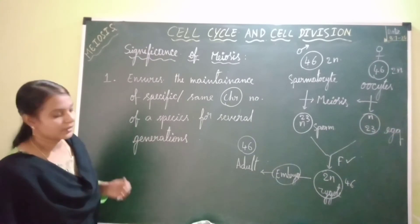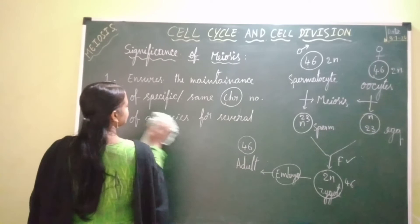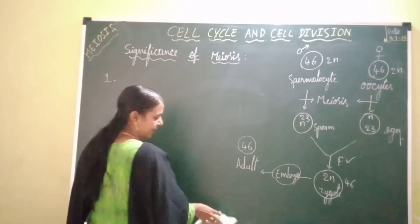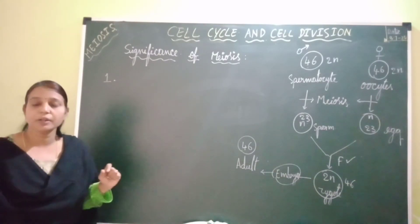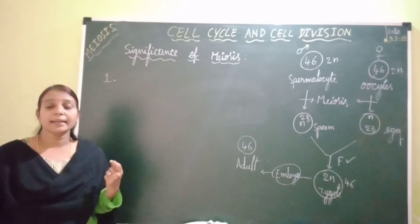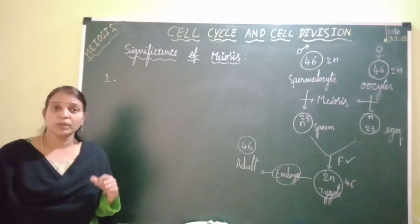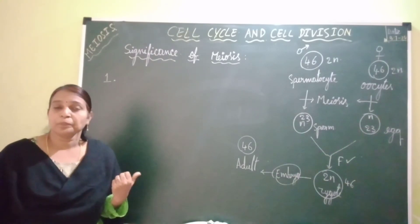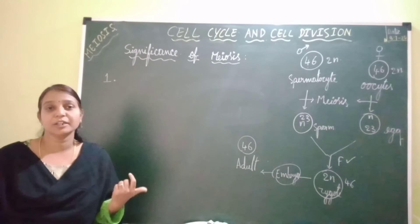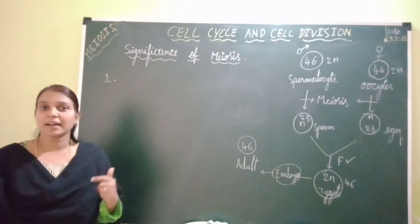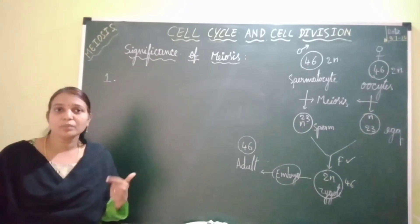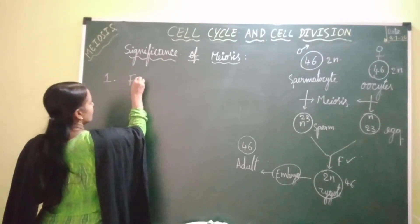The next significance is that meiosis helps in the production of variations among offspring. Offspring formed by asexual reproduction are exactly similar to their parents — there are no variations. But in the case of sexual reproduction, offspring formed from the parents are not exactly similar to their parents or among themselves; they show variations. These variations occur because of crossing over, which occurs during meiosis.